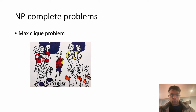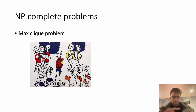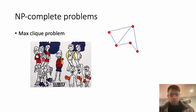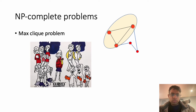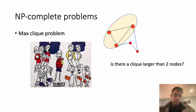Let's look at some examples. From graph theory: the max clique problem. A clique is like a high school group where everyone is friends with everyone else — in a graph, edges represent friendships and cliques are densely connected subsets. Given a random graph, finding the size of the largest clique is the maximum clique problem. That's not in NP-complete because it's not a decision problem, so we convert it: 'is there a clique in this graph larger than 2 nodes?' — that's a yes-no decision problem, and in this graph the maximum size is 3, so the answer is yes. That decision version is in NP-complete.